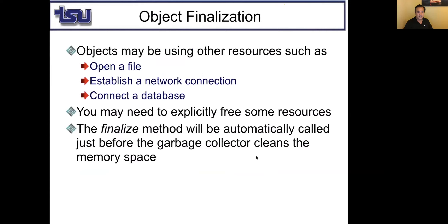Object finalization: assume that you created an object like a FileWriter or PrintWriter — a new object whose purpose may be to open a file, establish a network connection, or connect to a database. When that object is no longer in use, before you delete it from memory, you may want to do some final cleanup. For example, if that object opened a file, before it's deleted you may want to close that file. If you connected to a database and deleted the object used for that connection, the database connection might remain open. So the finalize method gives you a chance to free up resources.